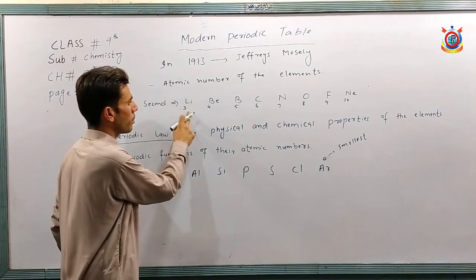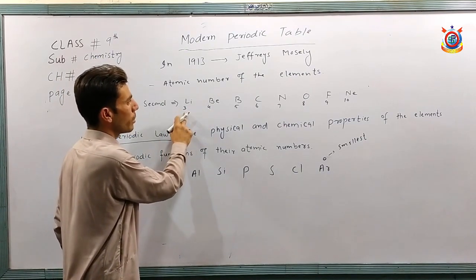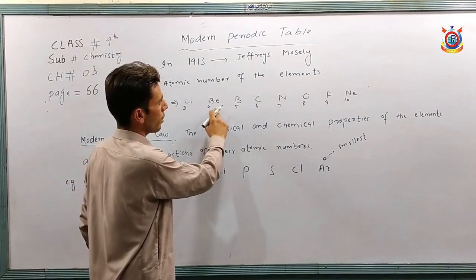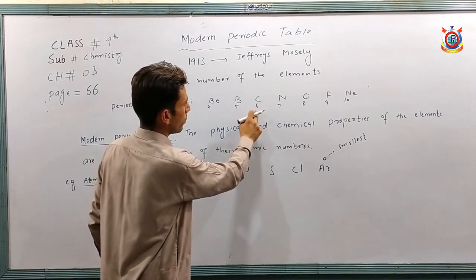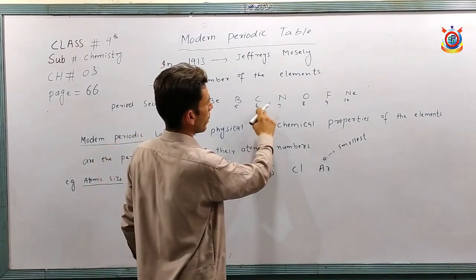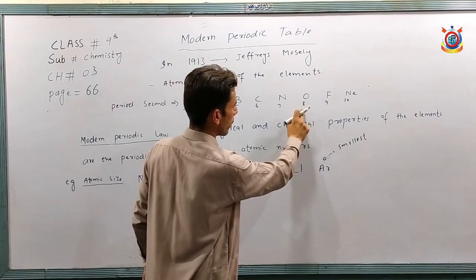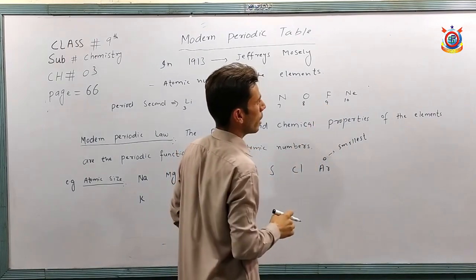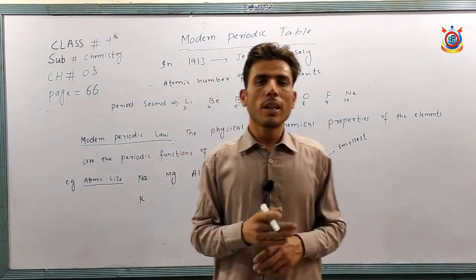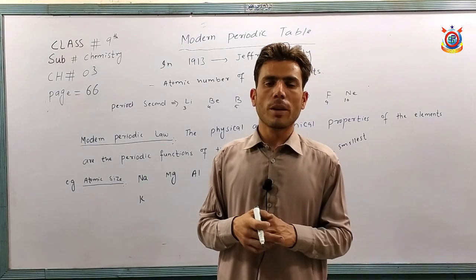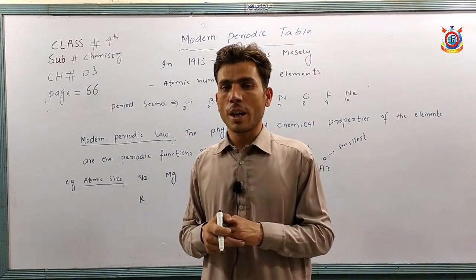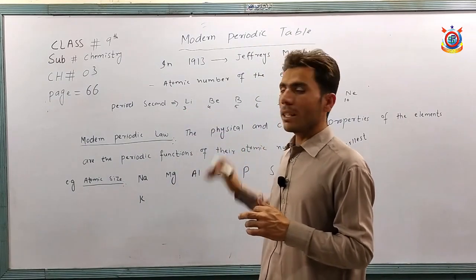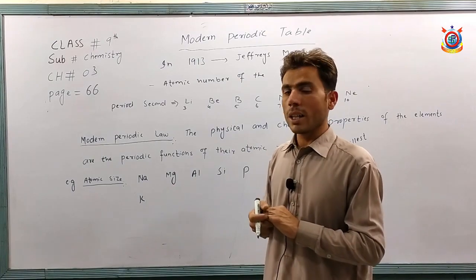The atomic number of lithium is 3, so it is placed before beryllium. The atomic number of beryllium is 4, so it is placed before boron. The atomic number of carbon is 6, so it is placed before nitrogen. The atomic number of oxygen is 8, so it is placed before fluorine. The atomic number of fluorine is 9, so it is placed before neon. In the modern periodic table, elements are arranged on the basis of their increasing atomic number.